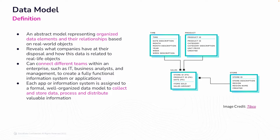Diving into the data model — a data model is an abstraction, an abstract model representing organized data elements and their relationships based on real-world objects. It reveals what companies have at their disposal and how this data is related to real-life objects. It can connect different teams within an enterprise, such as IT, business analysts, and management to create a fully functional information system or applications. Each app or information system is assigned to a formal, well-organized data model to collect and store data and process and distribute valuable information. Here you'll see a simplified version of a data model with information regarding sales, time, product, and store, each having those primary keys.